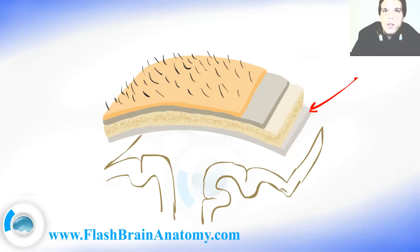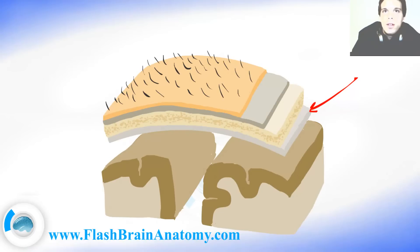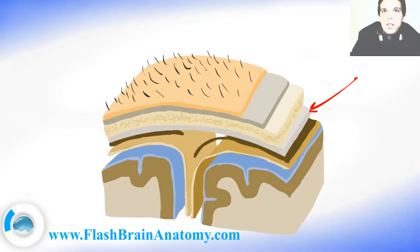Then I illustrated the cortex of the brain. And on the cortex there is a small thin layer called the pia mater. After pia mater there is arachnoid mater. And finally the meningeal layer of Dura mater.